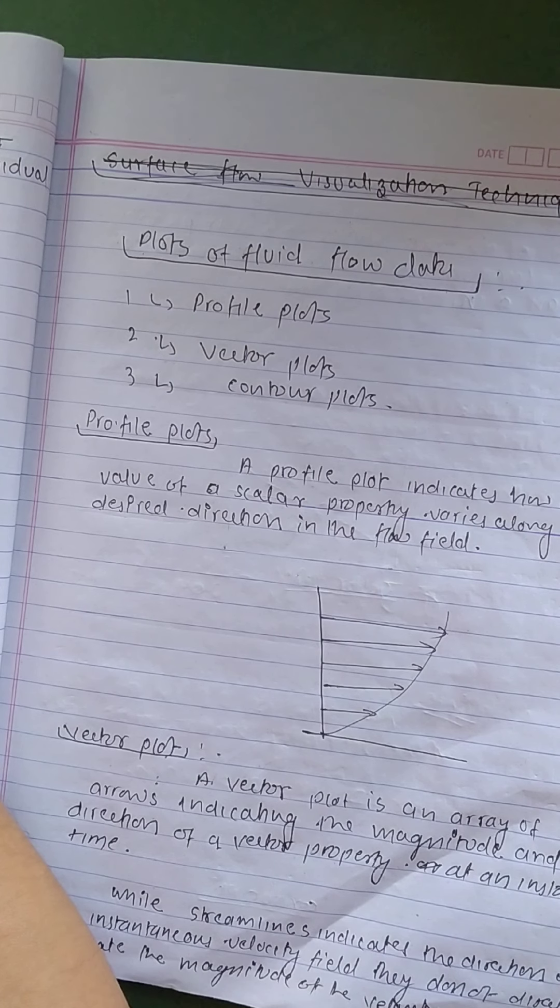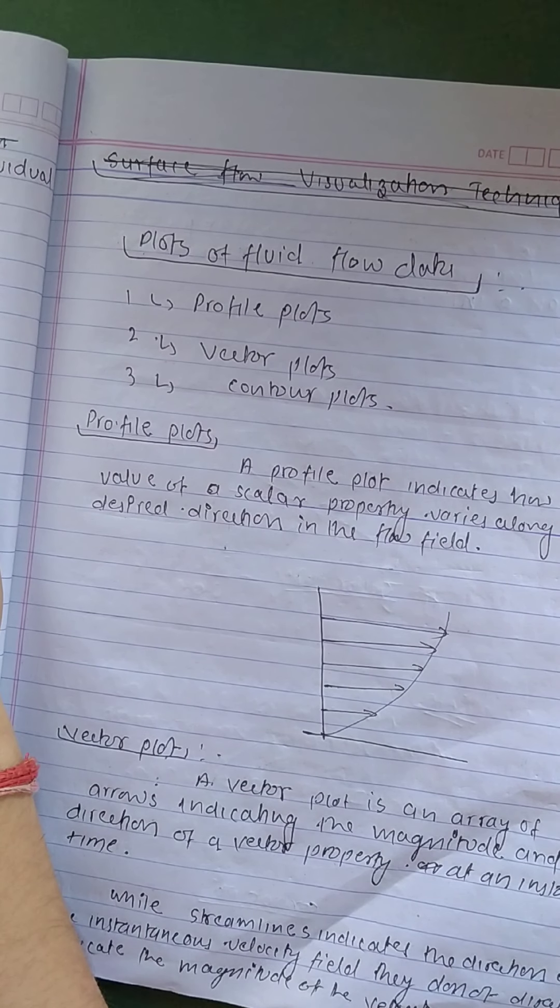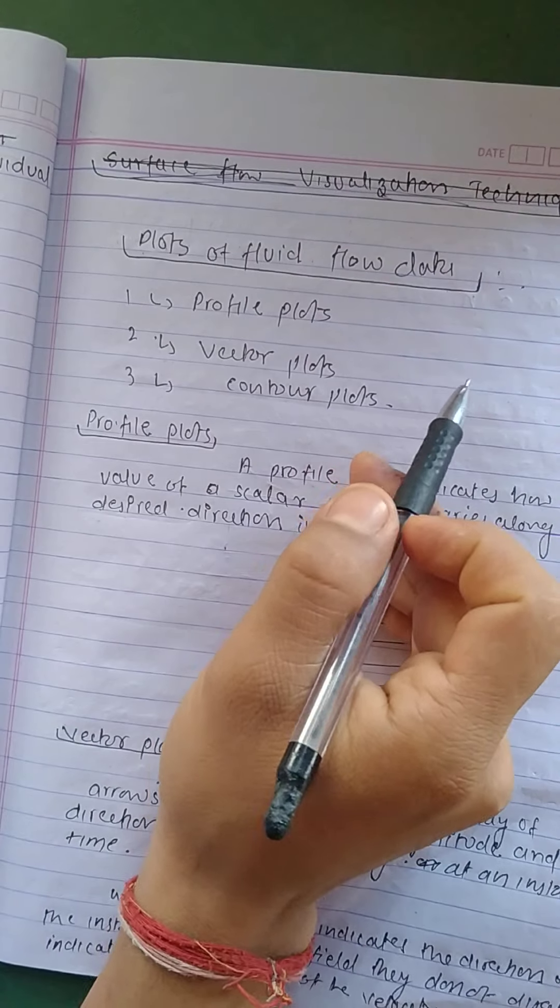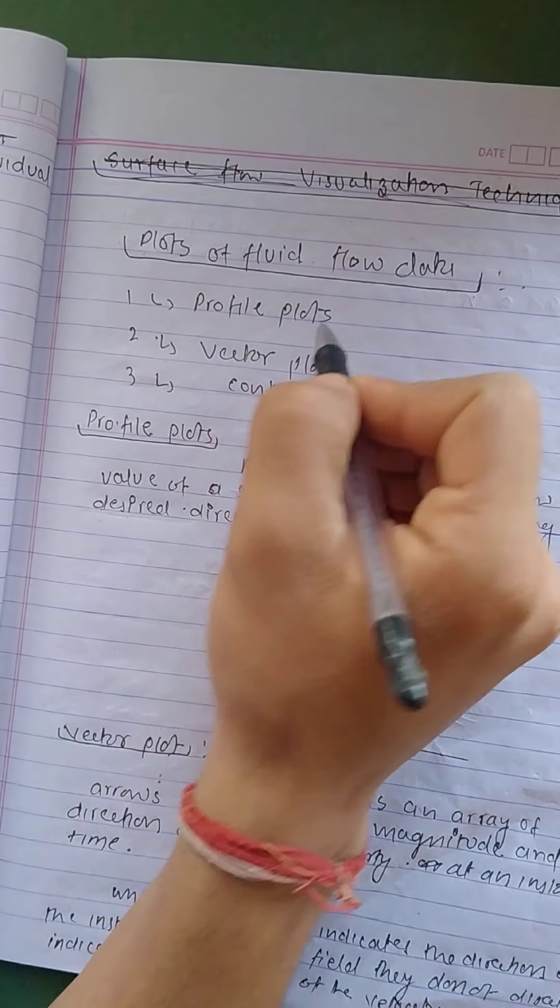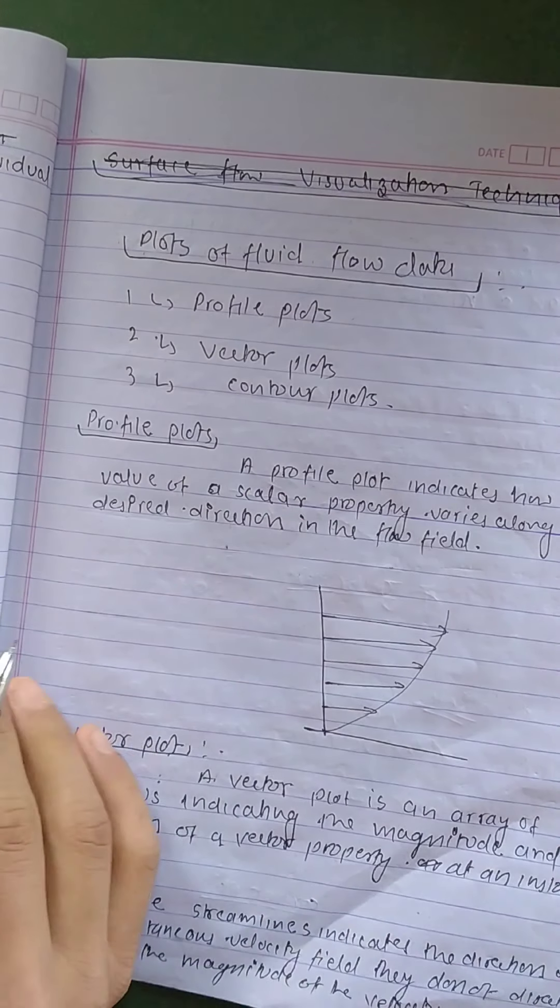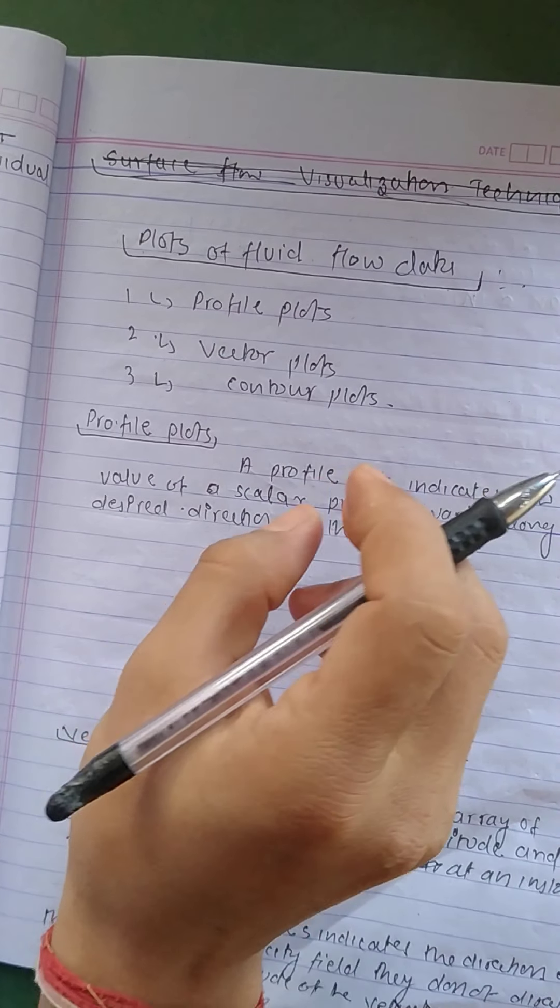So to know this fluid data, we have three plots. I listed here three plots: one is profile plot, another is vector plot, and third one is contour plots.